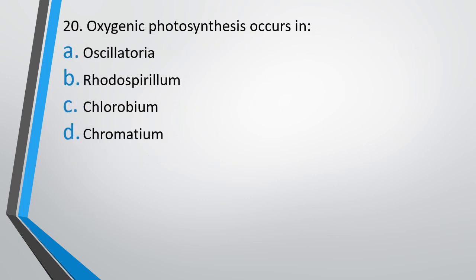Question number 20. Oxygenic photosynthesis occurs in Oscillatoria, Rhodospirillum, Chlorobium, or Chromatium. The correct answer is option A, Oscillatoria.